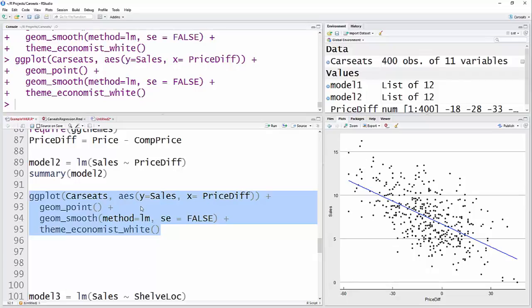Anyway, obviously Y is sales and X is price difference. The geom_point just says we want to use points in our graph. The smooth method equals LM just means I want a line for the linear model, and I don't want to include the standard error on there.